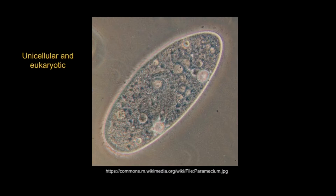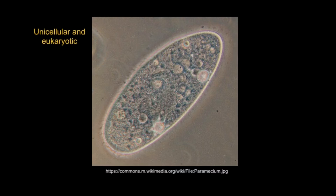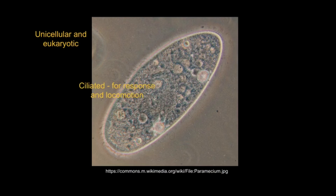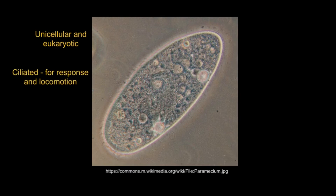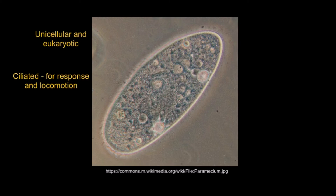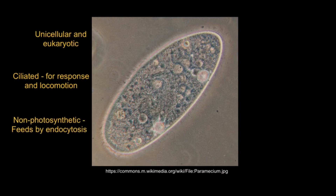Paramecium are unicellular and eukaryotic cells. Around the outside of the cell, you can find cilia. These cilia are used for response and locomotion in order for the paramecium to be able to move.